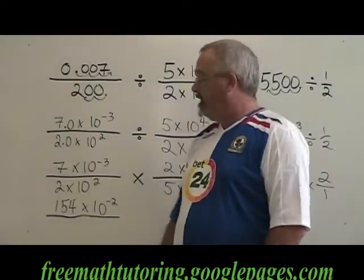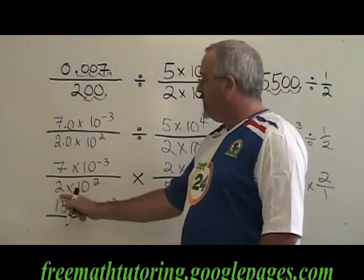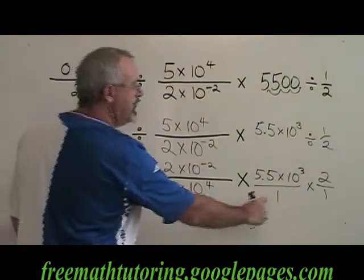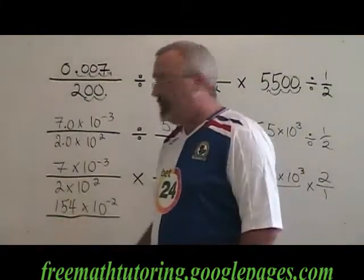Now for our denominator. The constant terms are 2 times 5 times 1 times 1. That multiplies to give us 10.